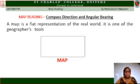Map Reading, Compass Direction and Angular Bearing. A map is a flat representation of the real world. It is one of the geographer's tools. The shape on the screen is a simple representation of a map.